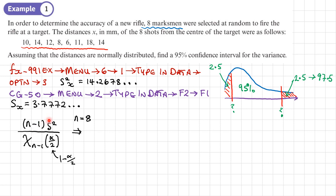Now we work out n minus 1, so that's going to be 7, times by our sample variance, 14.2678, divided by a chi-squared distribution with n minus 1 degrees of freedom, 7, and this is going to be 2.5 here.